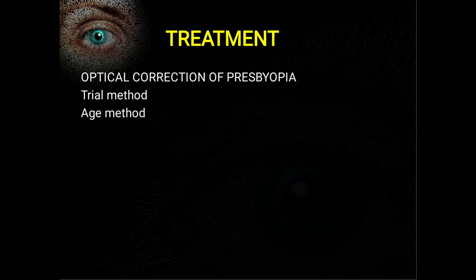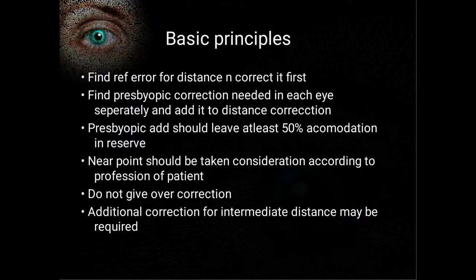If all these measures fail then we have to give glasses — positive or convex lenses are the treatment of choice. There are two methods to find optimum correction: the trial method, where we try lenses on the patient and give whatever the patient finds most comfortable; and the age method, based on a chart showing how much correction is required at a particular age.